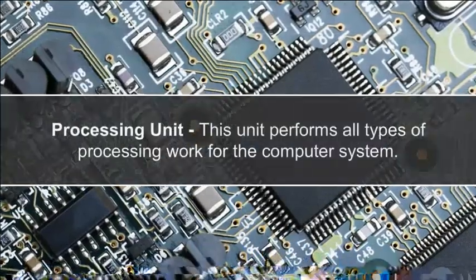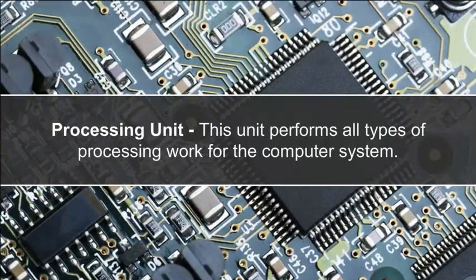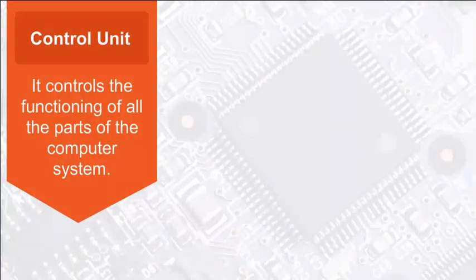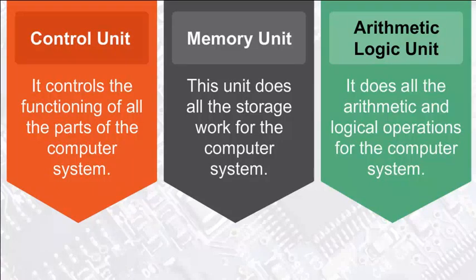The Processing unit performs all types of processing work for the computer system. It has three parts: the Control unit, which controls the functioning of all parts of the computer system; the Memory unit, which does all the storage work for the computer system; and the ALU (Arithmetic Logic Unit), which performs all arithmetic and logical operations for the computer system.